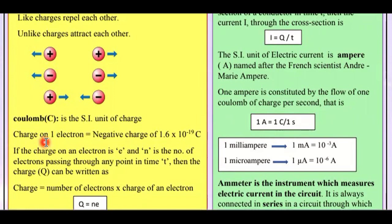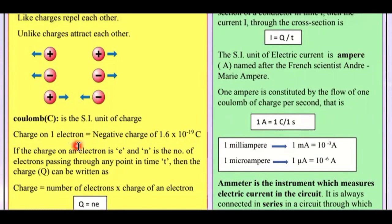One electron has a charge equal to negative 1.6 × 10⁻¹⁹ coulomb. So the charge on one electron is negative 1.6 × 10⁻¹⁹ coulomb.